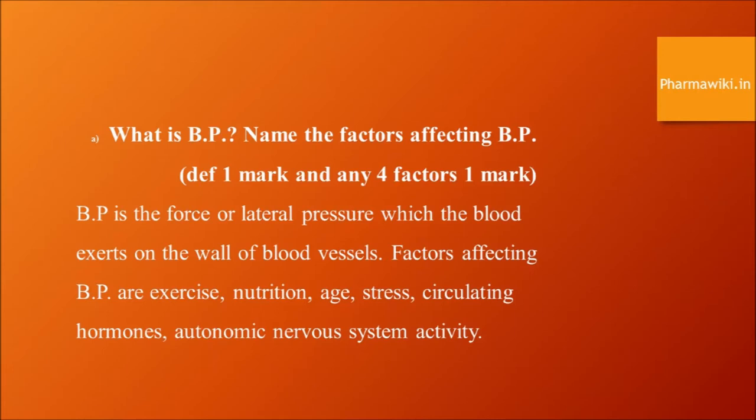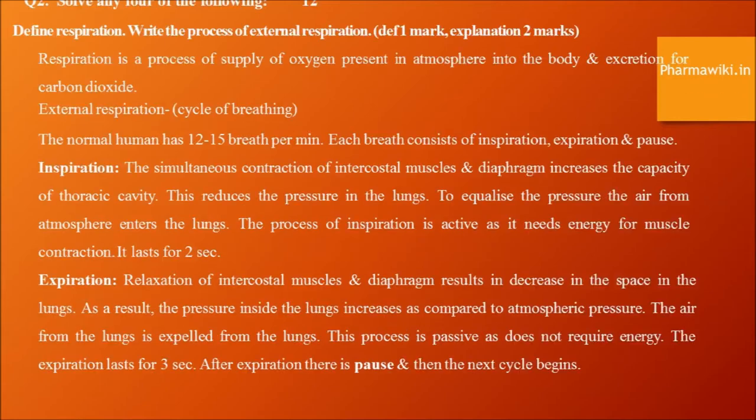Define respiration and write the process of external respiration. Respiration is the process of supply of oxygen from the atmosphere into the body and excretion of carbon dioxide. External respiration is nothing but the cycle of breathing. The normal human has 12 to 15 breaths per minute. Each breath consists of inspiration, expiration, and pause.